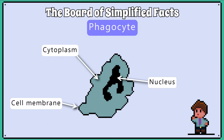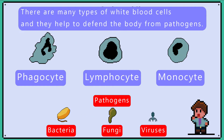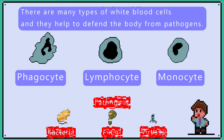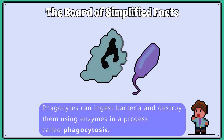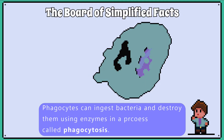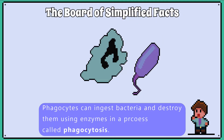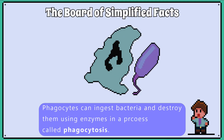Phagocytes have a much more irregular shape, and you'll need to be able to label the nucleus, cytoplasm, and the cell membrane. Phagocytes are a type of white blood cell and they fight pathogens like bacteria and fungi. They can engulf bacterial cells and break them down using enzymes in a process called phagocytosis.